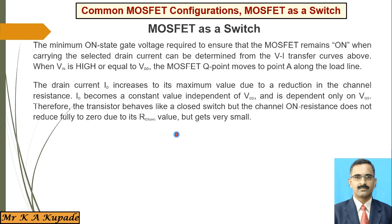Therefore, the transistor behaves like a closed switch, but the channel on-resistance does not reduce fully to zero — it retains some RDS on-resistance value, though it is very small. Whatever the ID is, it is completely independent of VDD and depends only on VGS — depending on how VGS is applied, ID flows accordingly.